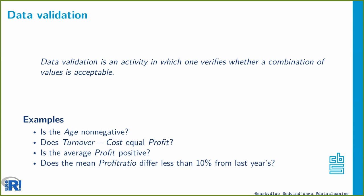Coming back to 'combination of values': age can be checked with one data point; turnover minus cost equals profit needs three. If you check something like 'is the average profit positive,' you need a whole column of data points. And if you check that the profit-to-turnover ratio differs less than 10% from last year, you need two columns from the current dataset and two from last year. The main point is this definition covers almost all your data validation needs — it's a very general definition.